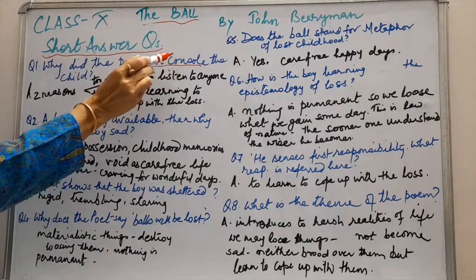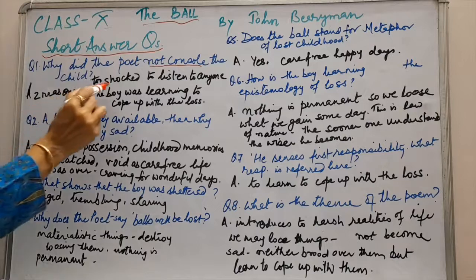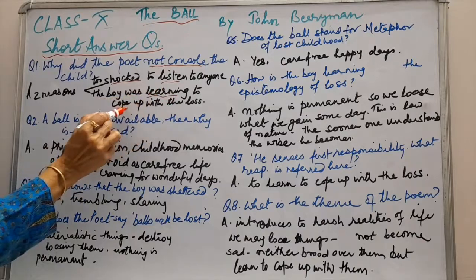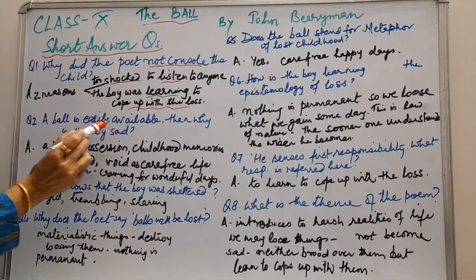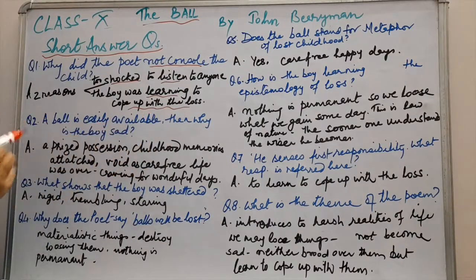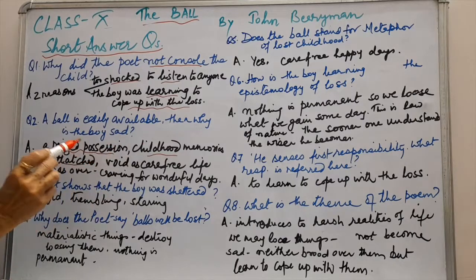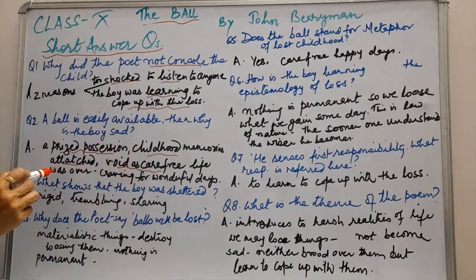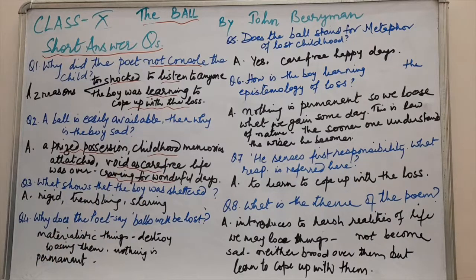There are two reasons he did not console the child: because the boy was too shocked to listen to anyone, and because the boy was learning to cope up with the loss on his own. The next question: a ball is easily available, then why is the boy sad? The boy is sad because it was a prized possession; his childhood memories were attached to it, and after losing the ball he felt a void in his life and a craving for those wonderful, innocent days.